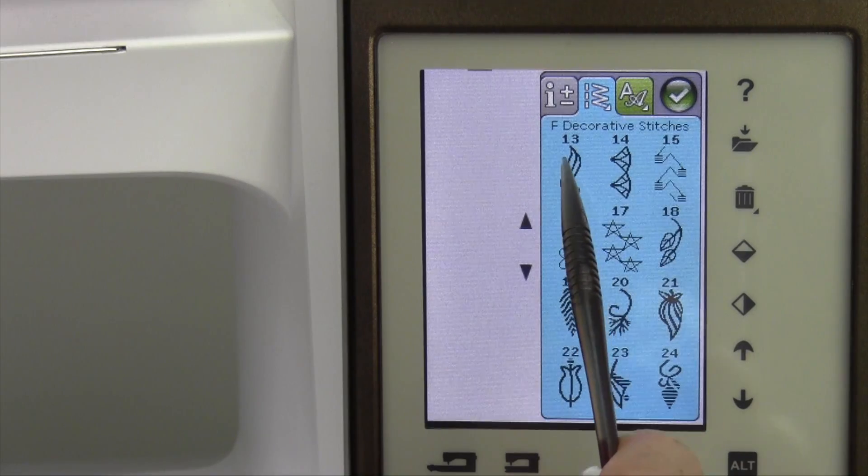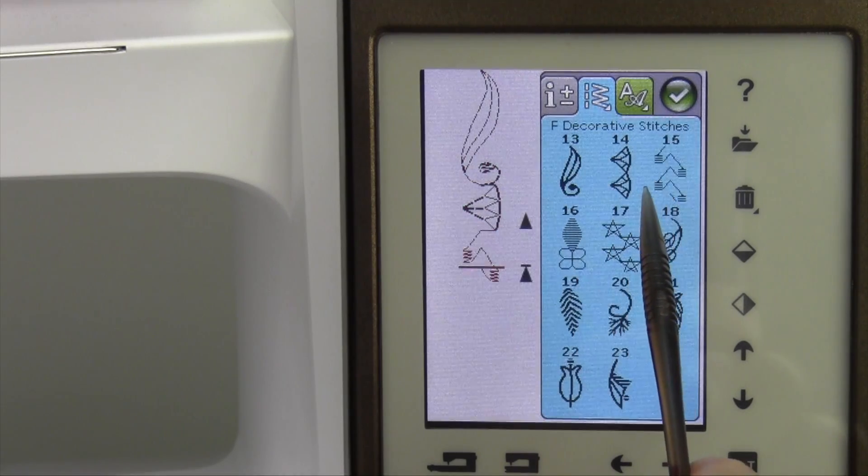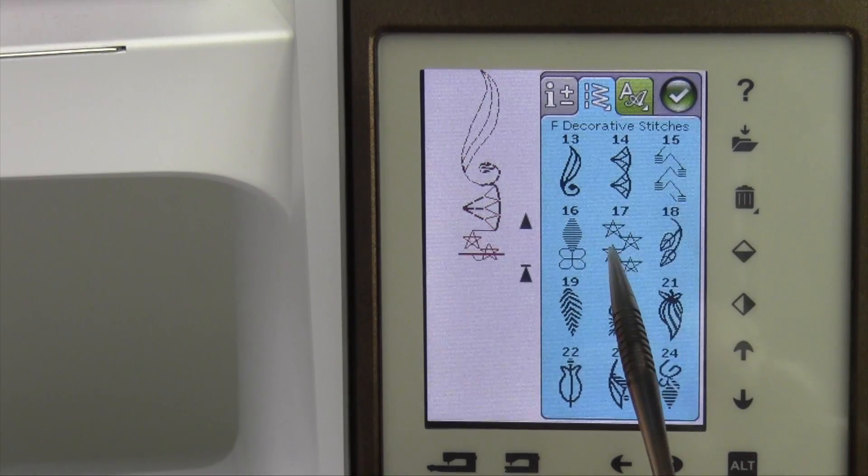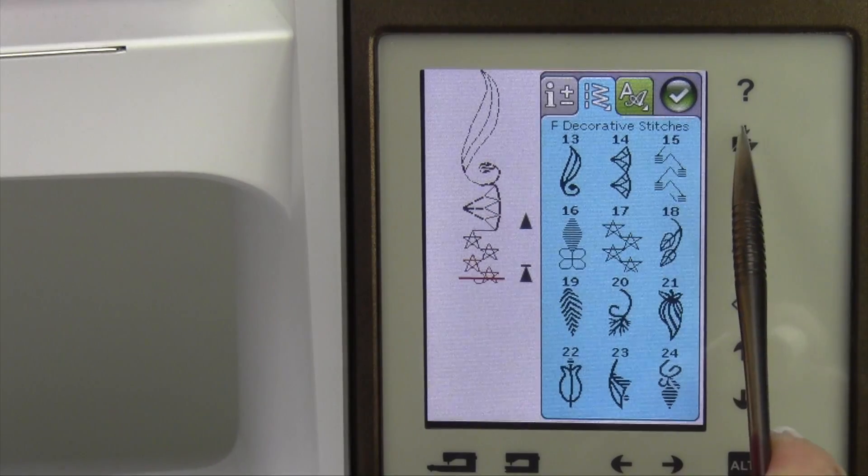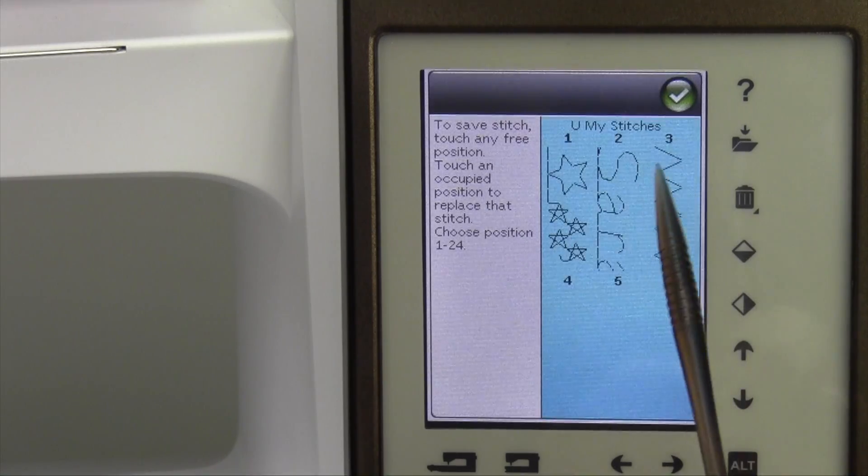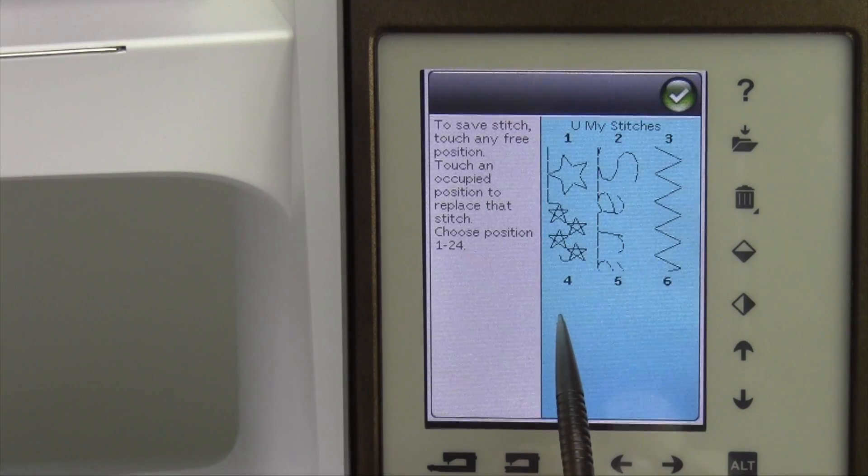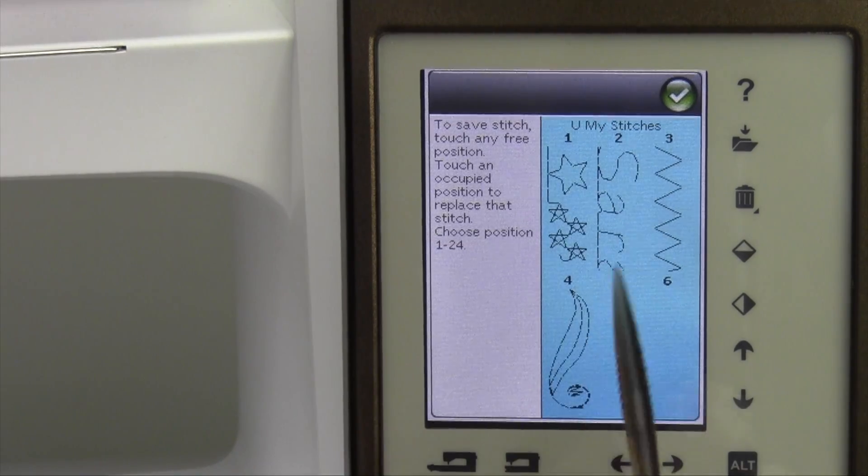Let's just come over here. We'll do like three decorative stitches. Maybe not that one, it doesn't look like much. All right, so we have three decorative stitches. We love this combination. We want to save it. Touch that folder with the arrow pointing into it, and then go ahead and touch the next empty memory, and that will save that combination.